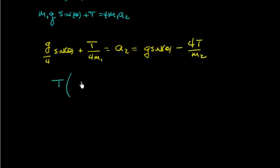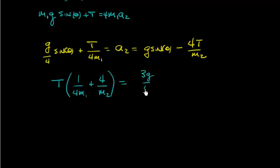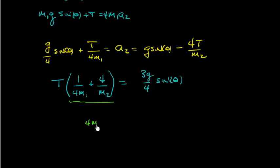Moving quickly now: tension times (1/(4m1) + 4/m2) must equal the g terms on the other side. We have g/4 and g remaining, which gives 3g/4 · sinθ on the right. Now we just need to solve for T. Let's simplify by putting everything under a common denominator of 4m1·m2.